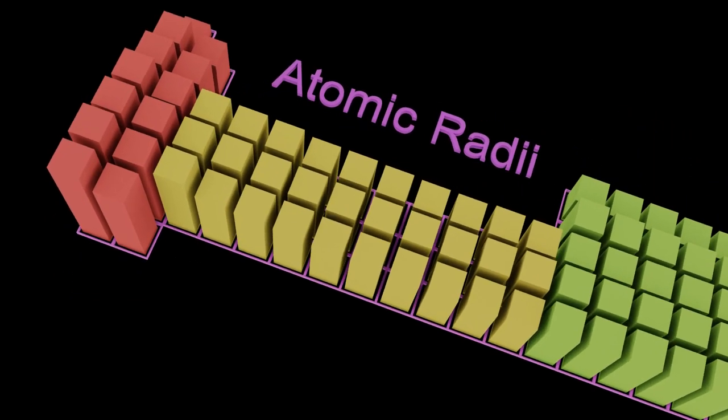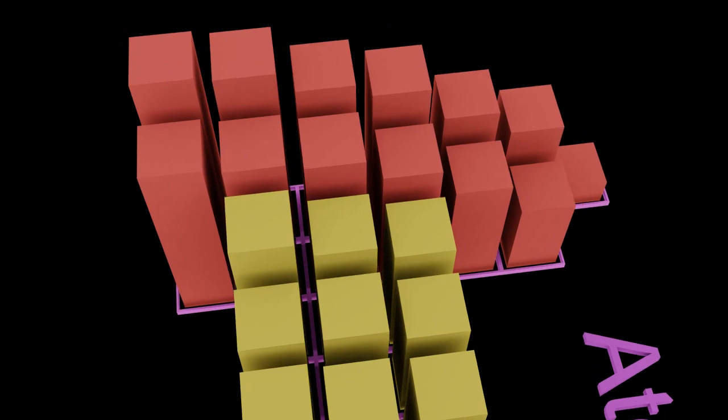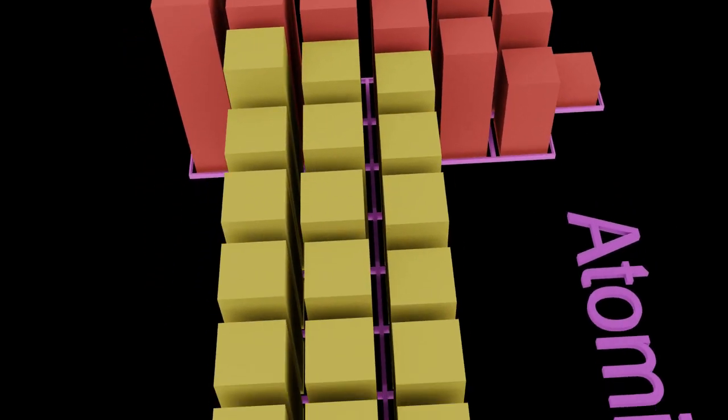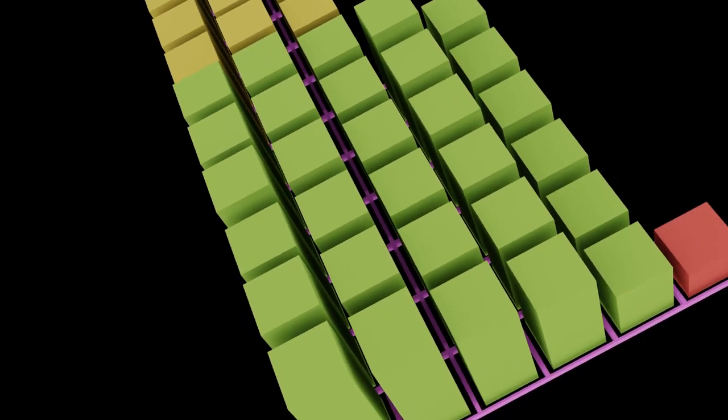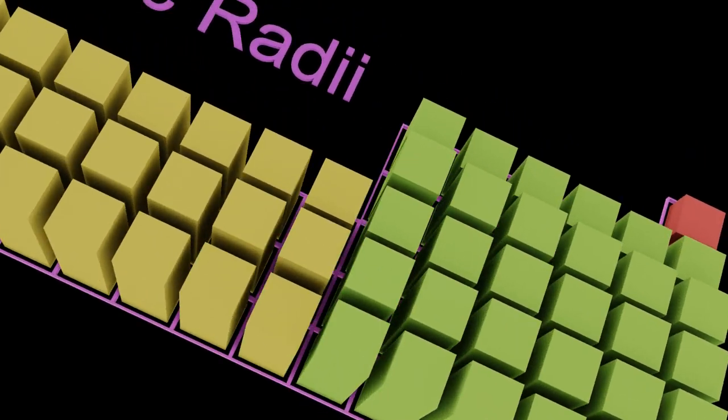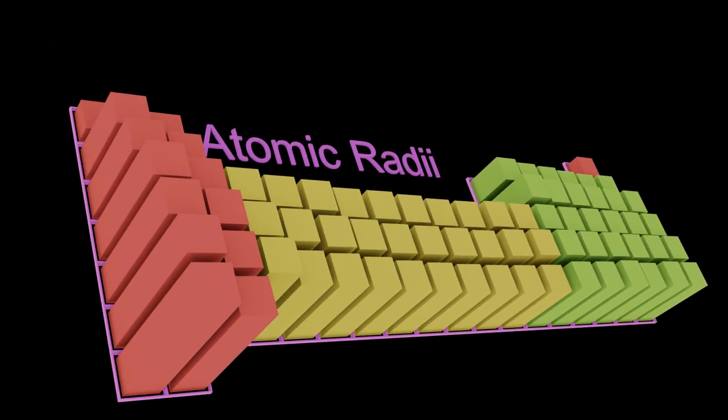The first is as you go down groups the atoms seem to get bigger generally. The ones towards the bottom of the table are bigger than the ones at the top. And as you go along the periods adding protons, neutrons, and electrons every time, paradoxically the atoms get smaller.